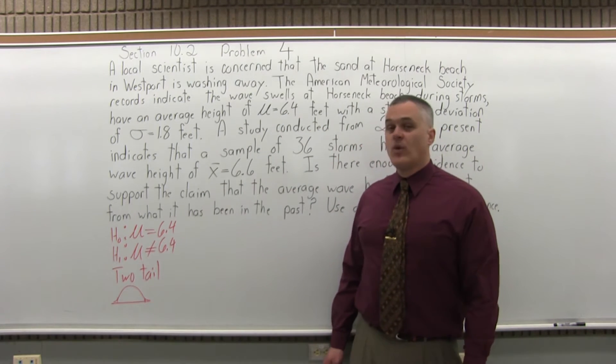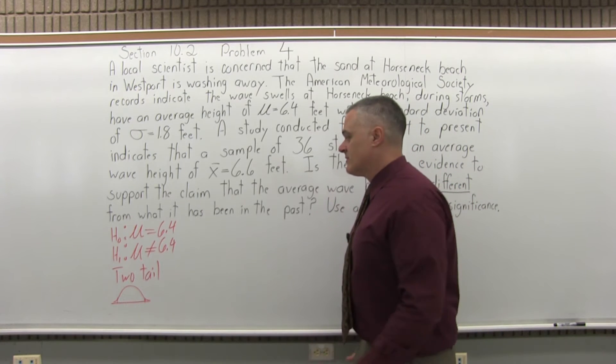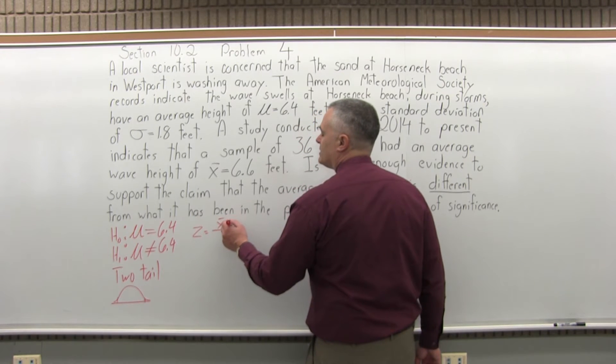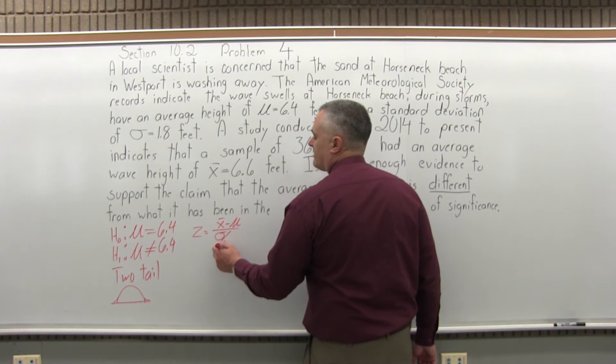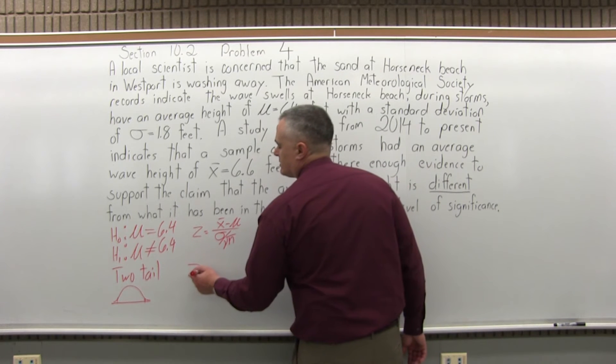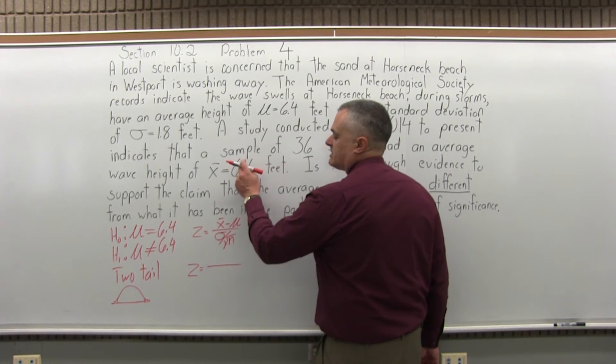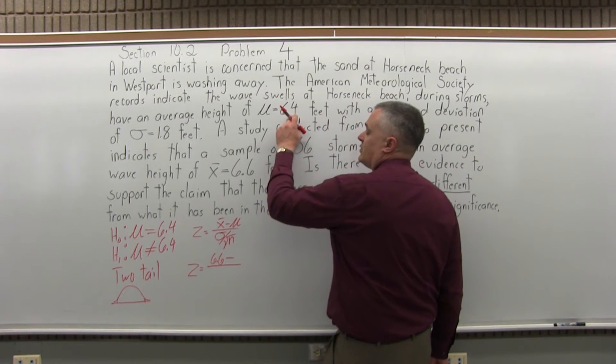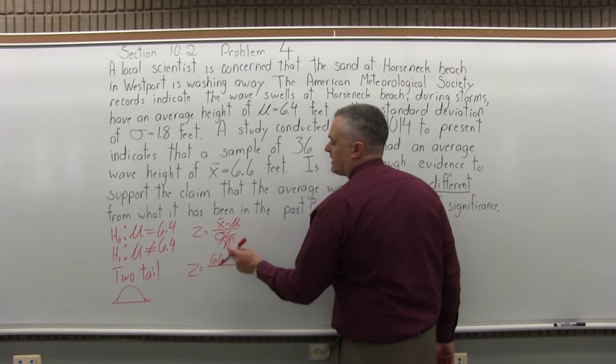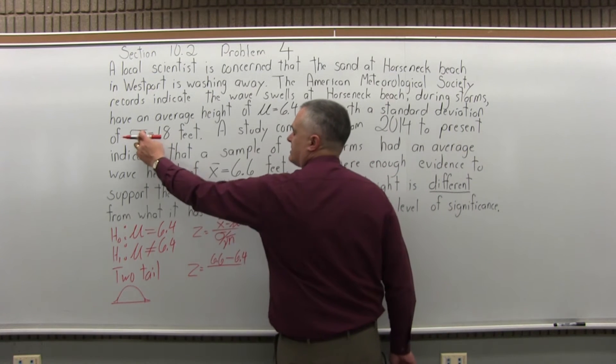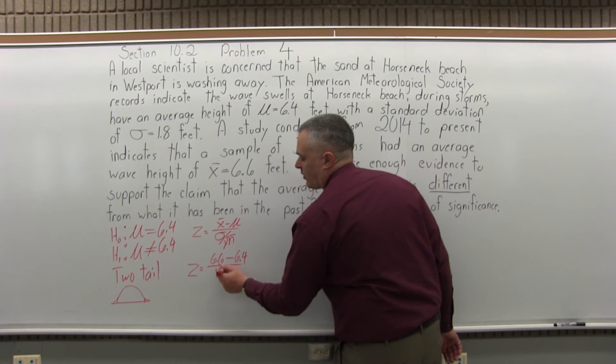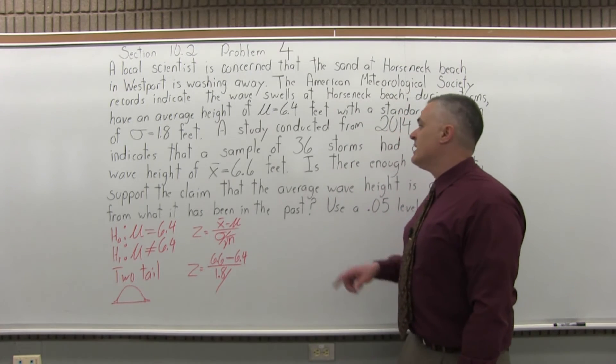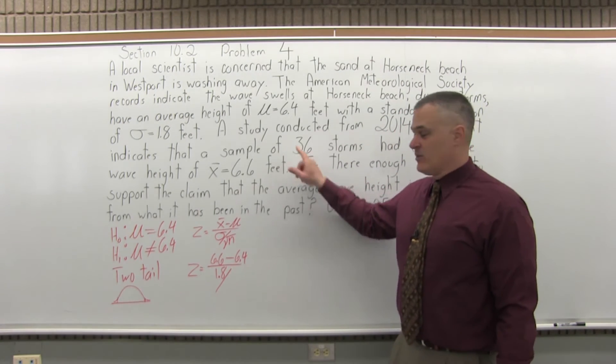So step four is calculate the value of z. Our formula for z is x-bar minus mu over sigma divided by the square root of n. So z equals x-bar is 6.6, the average of the sample, minus mu, mu is 6.4, the average of the population, divided by sigma over the square root of n. And sigma, the standard deviation for the population, is 1.8, square root of n. n is the size of the sample. So in this case, our sample has a size of 36, so n will be 36.